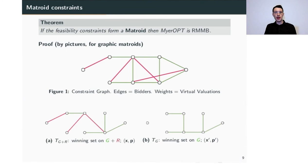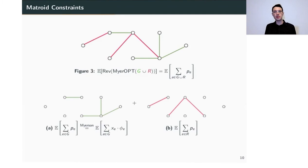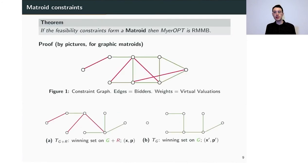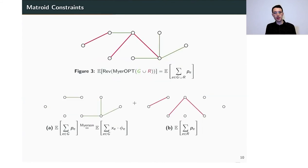I want to show that the revenue of the left mechanism is at least the revenue of the right mechanism in expectation. I express the expected revenue as the sum of payments from green edges and payments from red edges. For the first part, I use Myerson's Lemma to express it as a virtual valuation. For the second part, I lower bound it using the following trick: I add each red edge to the green-only solution. Recall that in a maximum spanning tree, adding a forgotten edge creates a cycle, and I can update the tree by removing the minimum edge of that cycle.